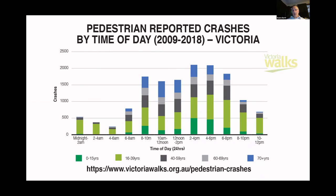Older people being overrepresented is largely because their bodies are more fragile — if they're hit by a vehicle they're more likely to be injured, and it's more difficult for them to recover, so the injuries are more severe. That's quite a concern to Victoria Walks, and we've raised this in the media a number of times. The other age group thing to note is that children are mostly hit after school, not so much before school, interestingly.